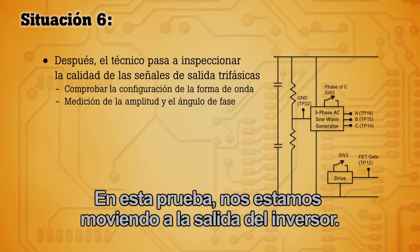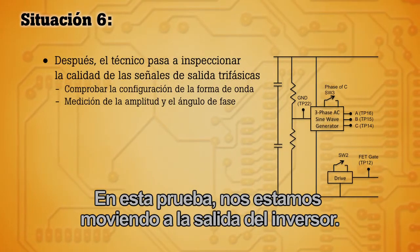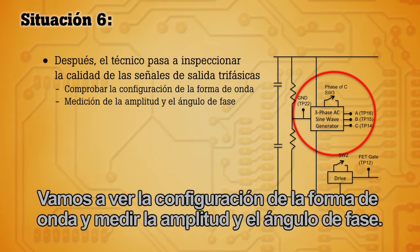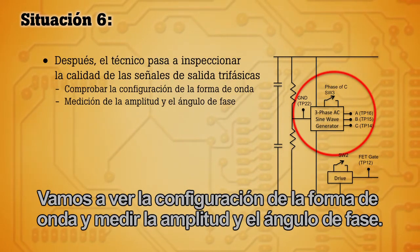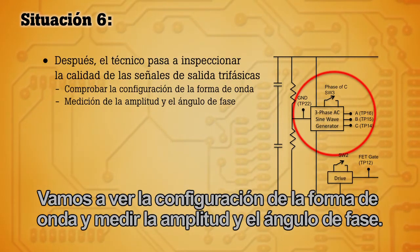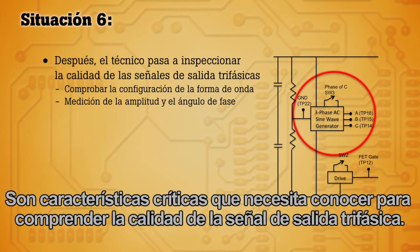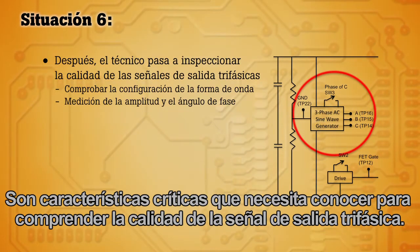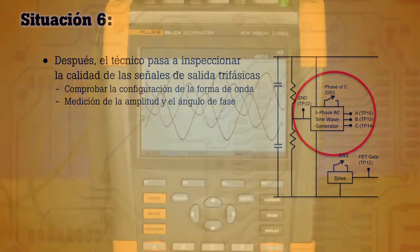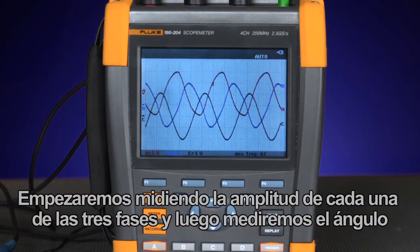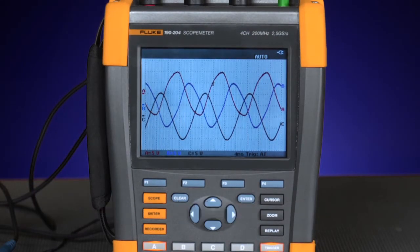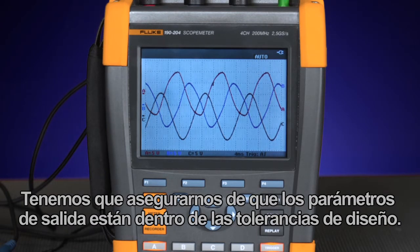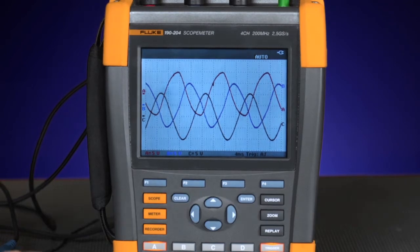For this test we're moving to the output of the inverter. We're going to look at the waveform shape and measure the amplitude and the phase angle. These are critical characteristics you need to know to understand the quality of the three-phase output signal. We'll begin by measuring the amplitude of each of the three phases and then we'll measure the phase angle between two of the phases. We need to make sure that the output parameters are within the design tolerances.